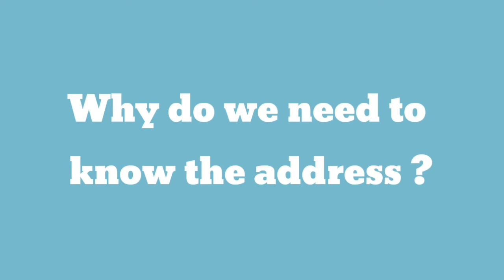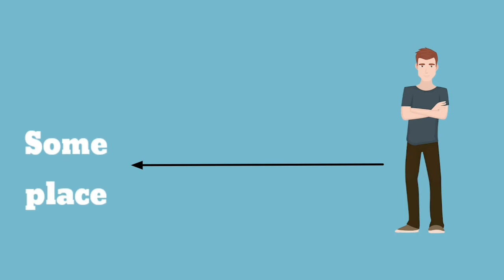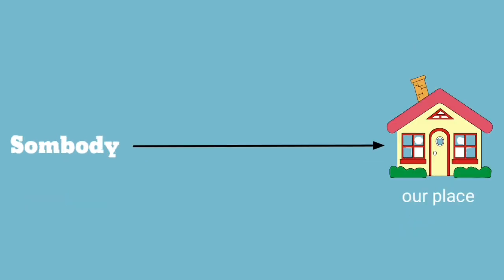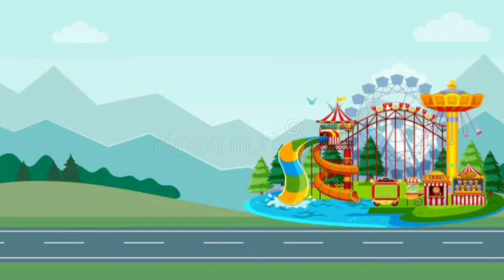Now, tell me: why do we need to know the address? If you want to go to some place, first we should know the address. Or if somebody wants to come to our place, they should know our address. For example, if you want to go to an amusement park and you decide to take a taxi, first you should know the address of the amusement park — only then will the taxi driver be able to take you there.